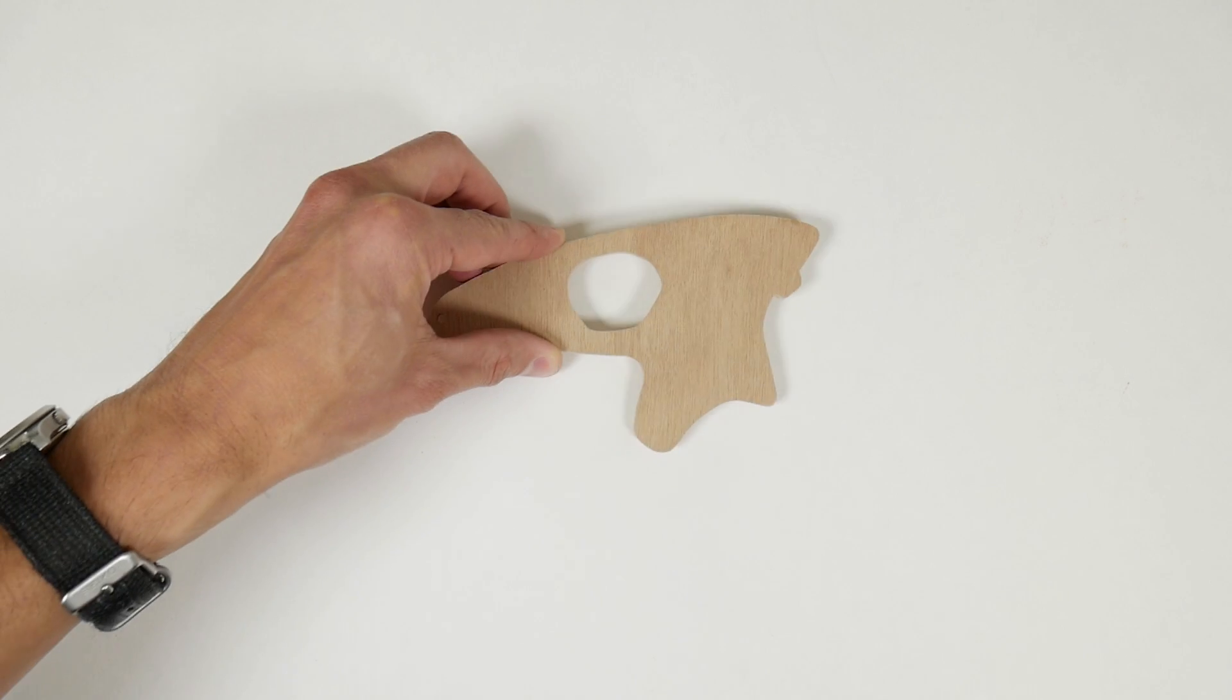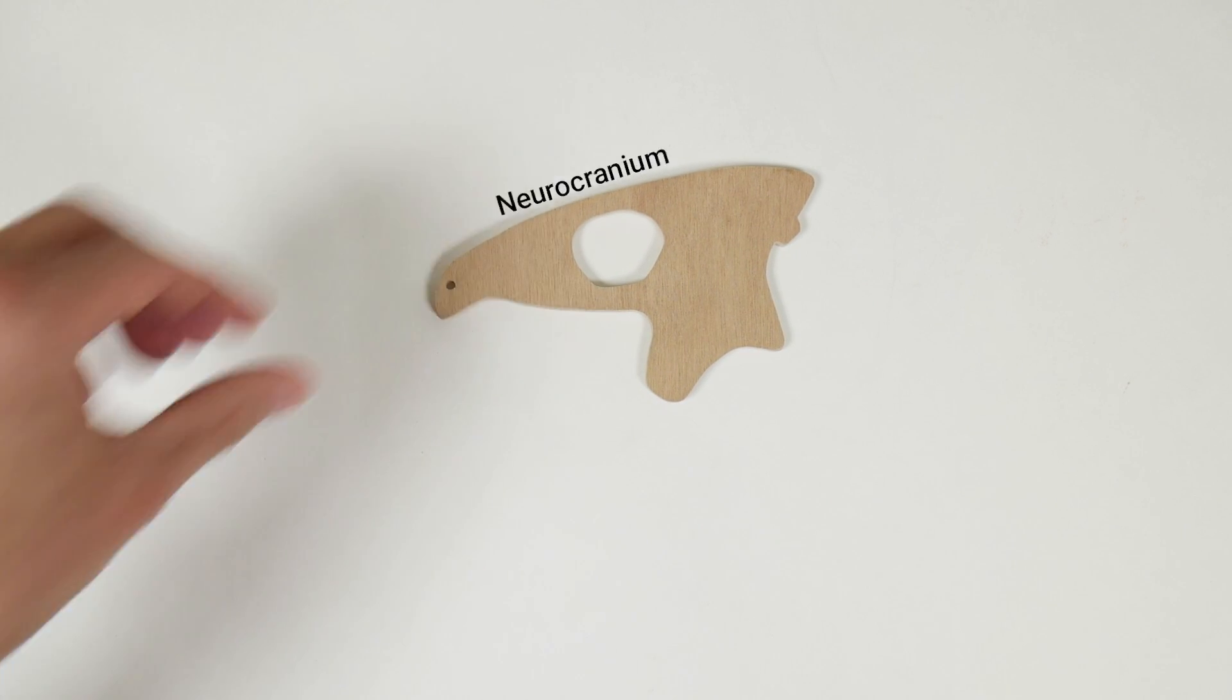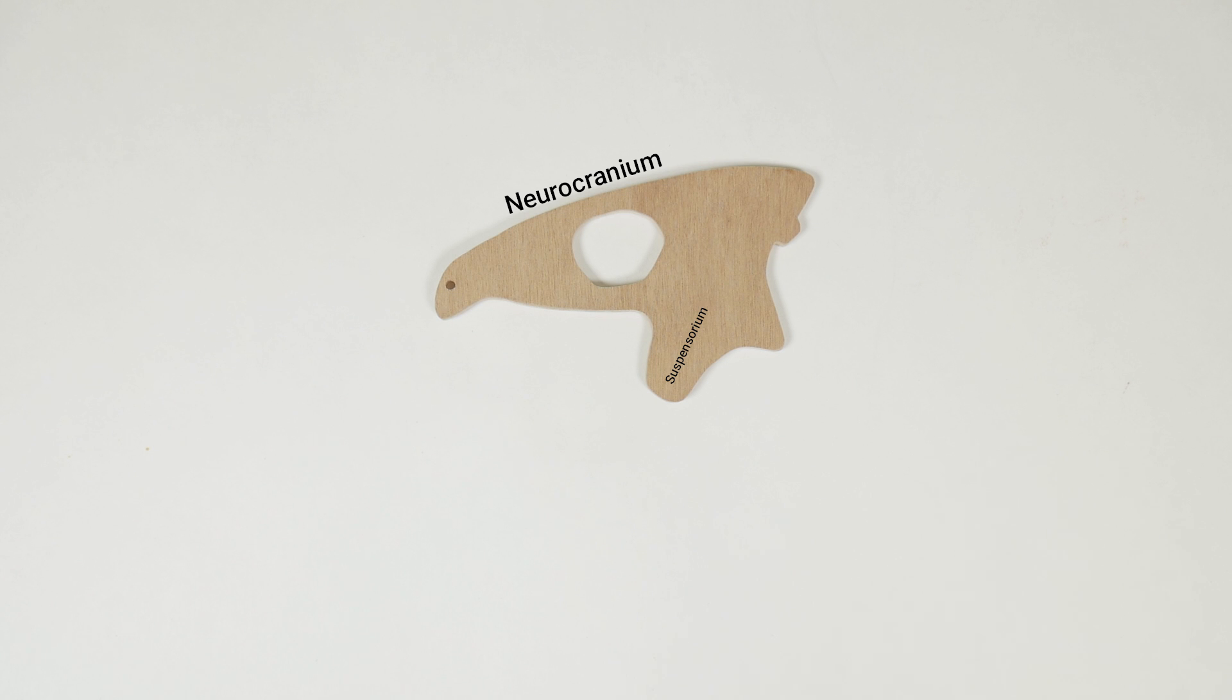The largest piece represents the neural cranium which encloses the brain, plus the suspensorium and the hyomandibula. There are actually many bones that make up this part, but most are tightly joined and immobile, so I simplified them into a single piece.